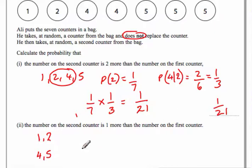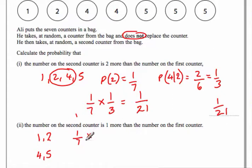The probability of getting a one first is one seventh, because there's only one 'one'. Multiplied by one out of six for the two, since there's only one two and now six counters remain. So that gives one out of forty-two.